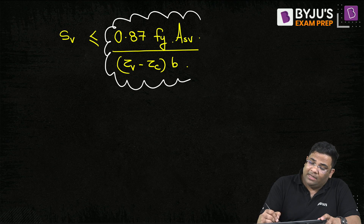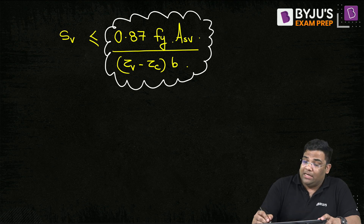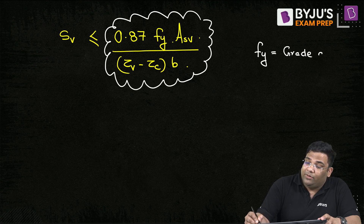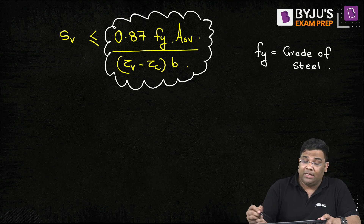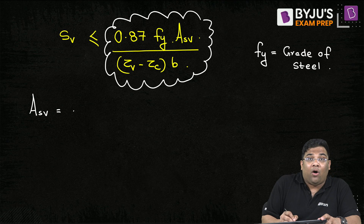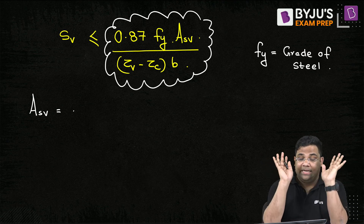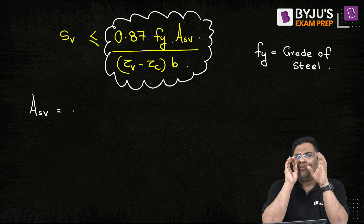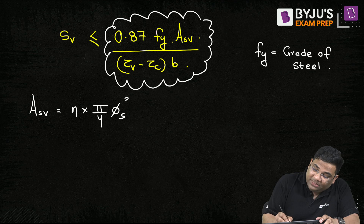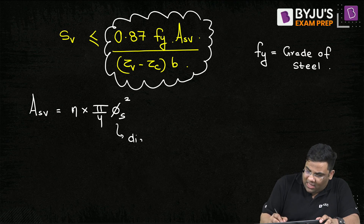In this formula, Fy is the grade of steel used for the stirrups. Asv is the area of the vertical stirrups, which equals N × (π/4) × (dia of stirrup)², where N is the number of legs and dia is the diameter of the stirrup.